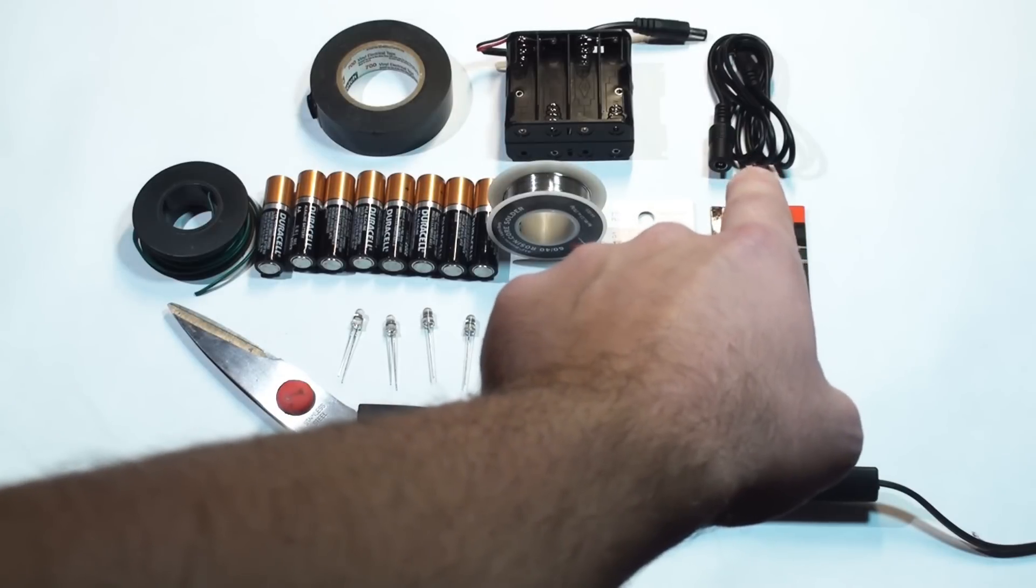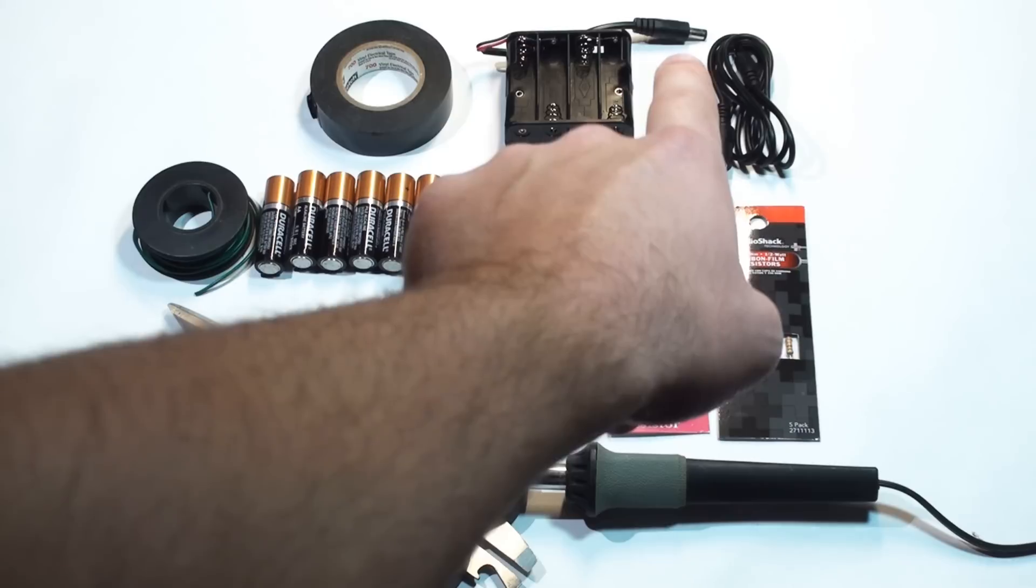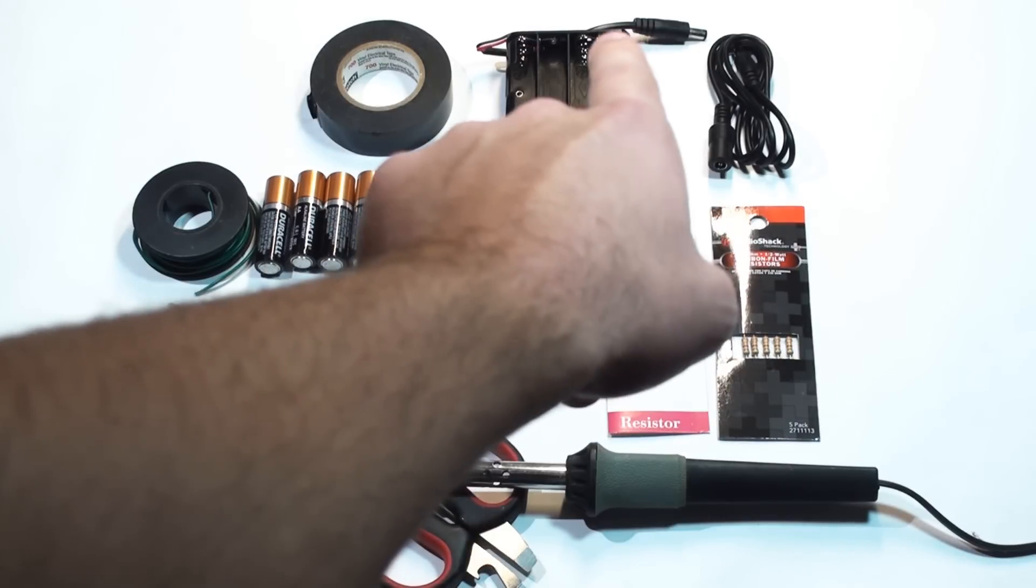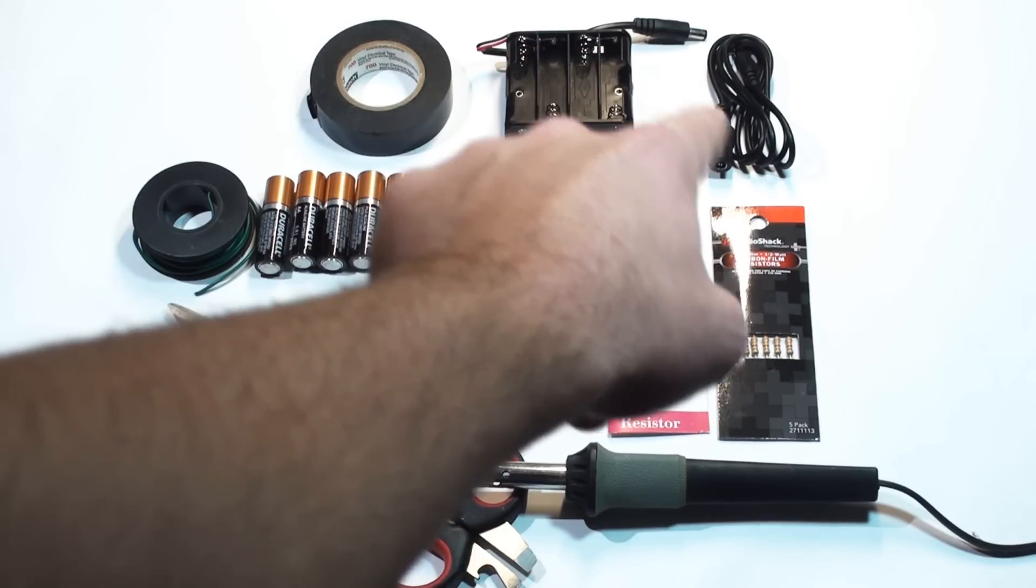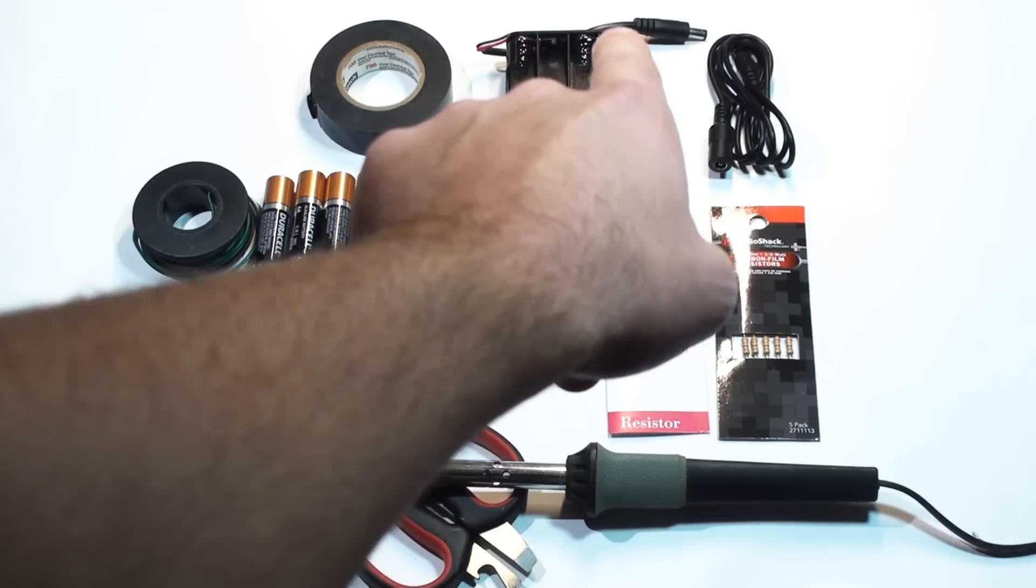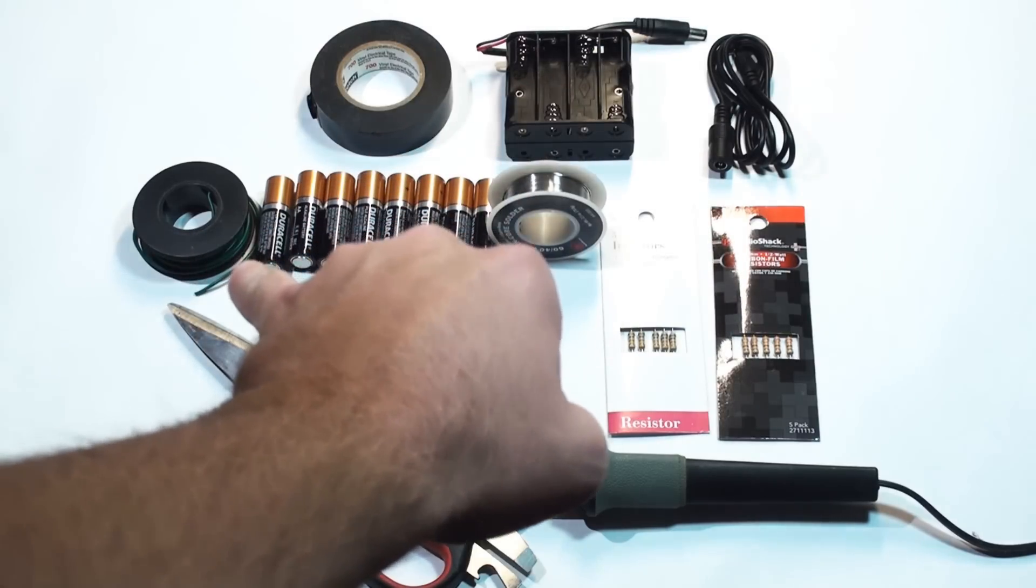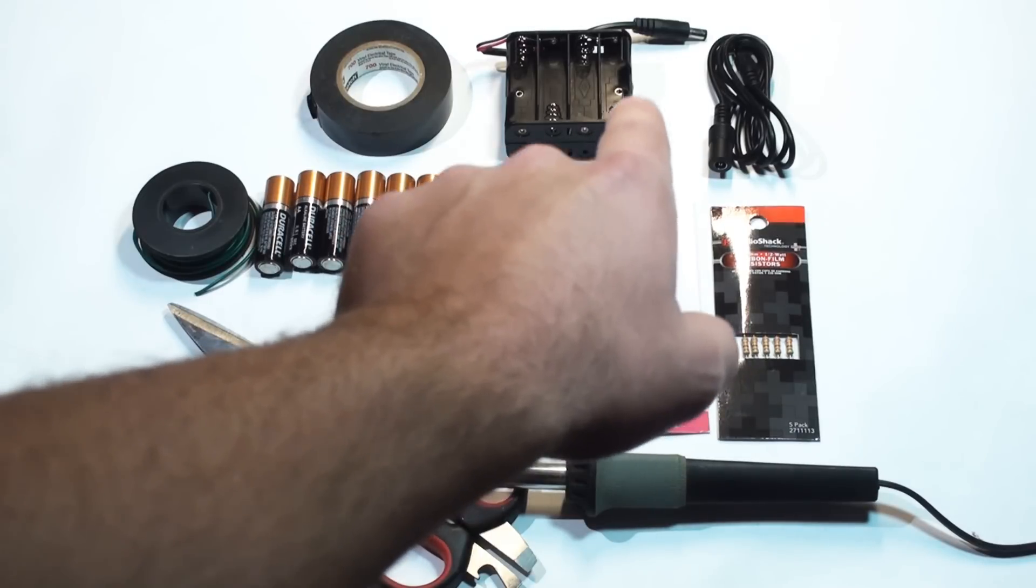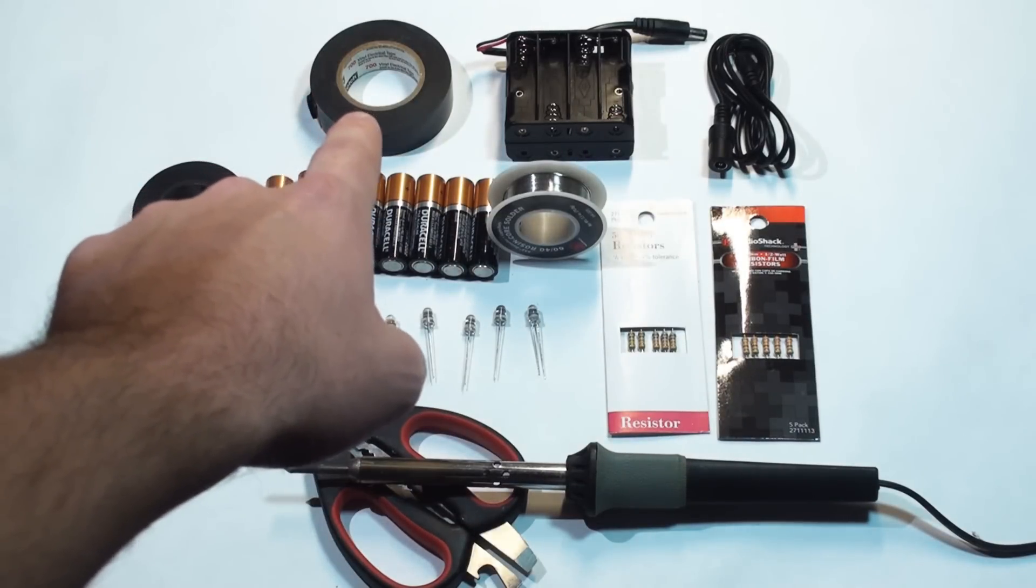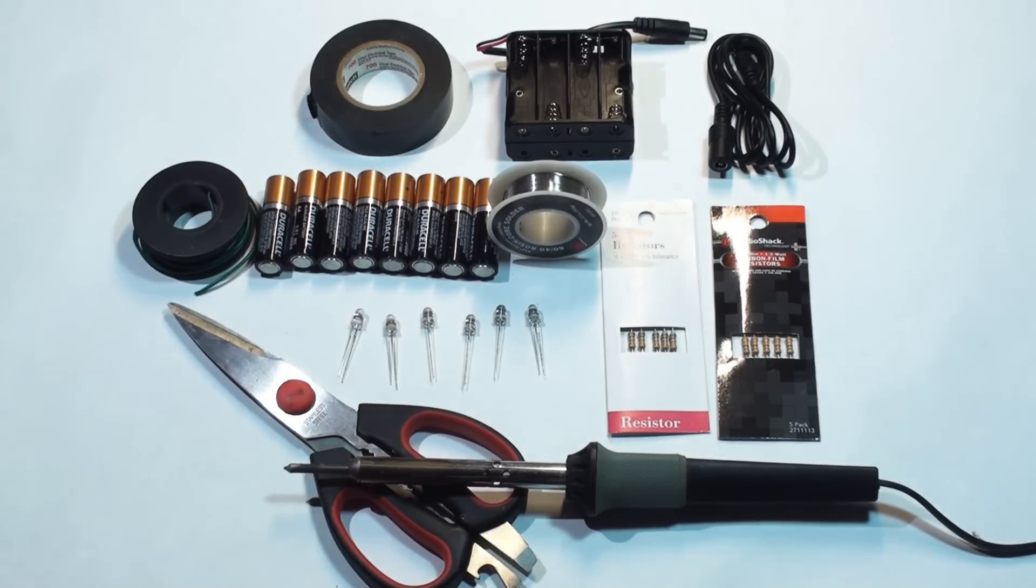Here we have 6 LEDs. These are multicolored RGB LEDs. We have 2 packs of resistors. These resistors are going to vary greatly depending on what LEDs you choose. At the top here, we have an extension cable for our battery harness. This is optional. And we have some electrical tape.